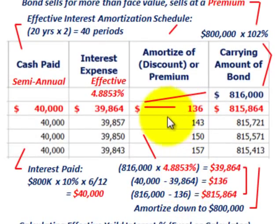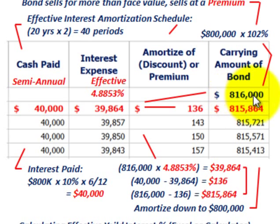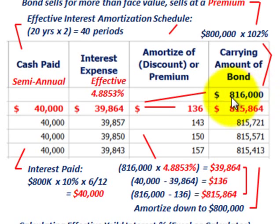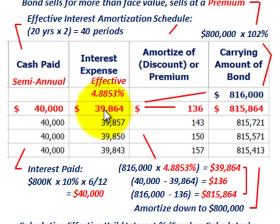Now let's go up to our amortization schedule. We're going to amortize the $16,000 premium over this 20-year life of the bond. We start with the carrying amount of $816,000 and multiply by the effective interest rate of 4.8853%, giving us interest expense of $39,864 for the first period.